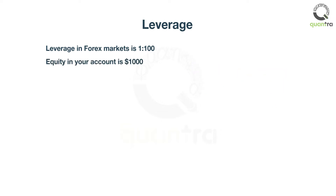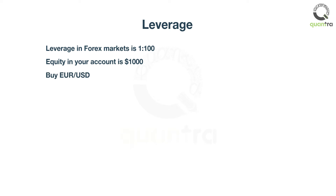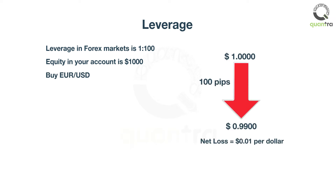Say you have $1,000 cash as equity and 1 to 100 leverage. This means you can take positions worth $100,000, or 100 times of your equity. If you make an incorrect trade in EUR to US dollar, and say a movement of 100 pips goes against your position, then it leads to a loss of $1,000 — your entire equity in the account. The example on screen shows the calculations.